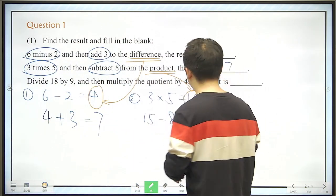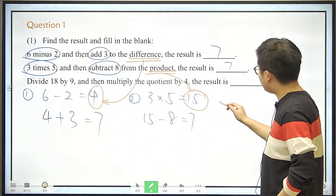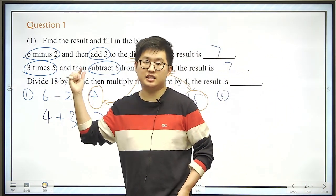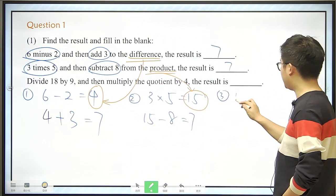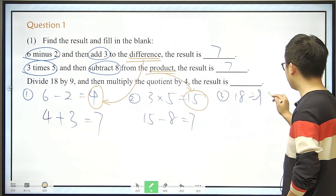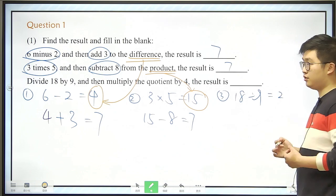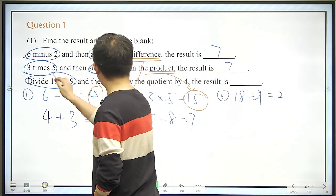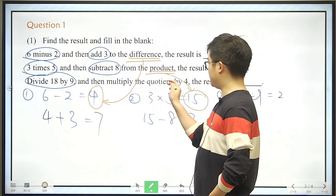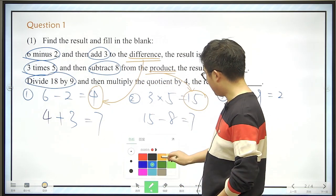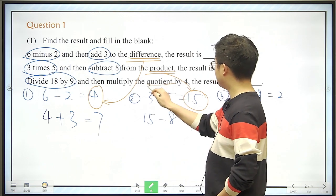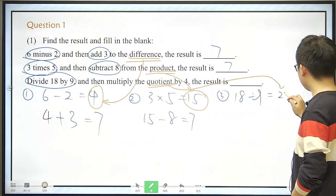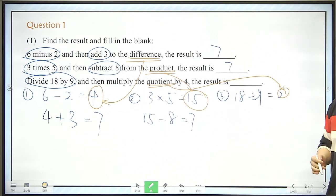This is just the coincidence, alright? And the third one here, we should divide 18 by 9, and that is 18 divided by 9, we know the result is 2. And then, we should multiply the quotient. So what is this? This is the result of a division, here it is 2.